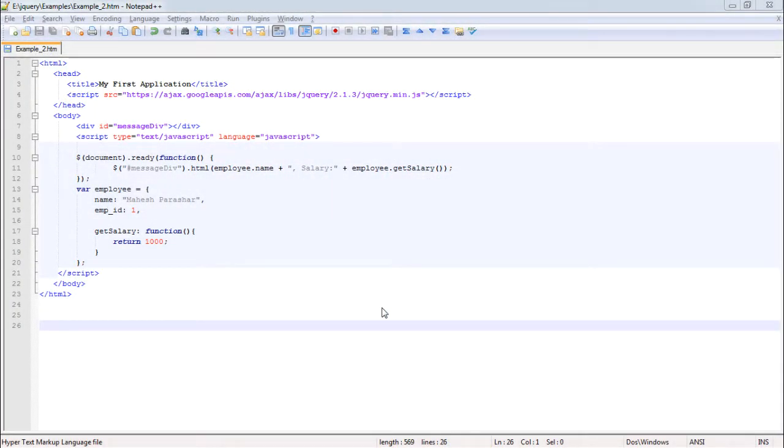In this example, we have created an employee object with name as property, employee id as another property. Get salary is the method which is returning 1000.